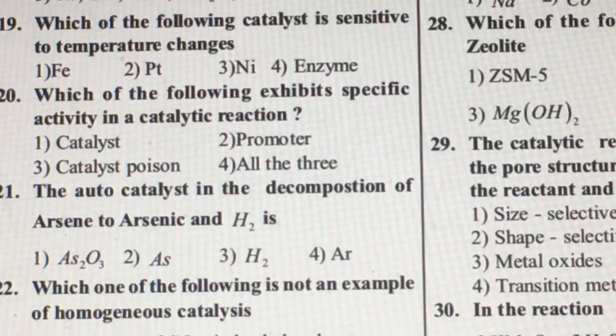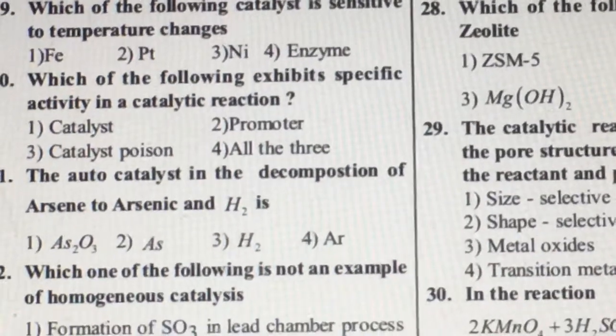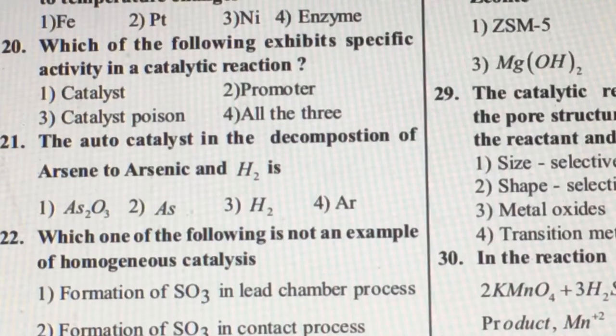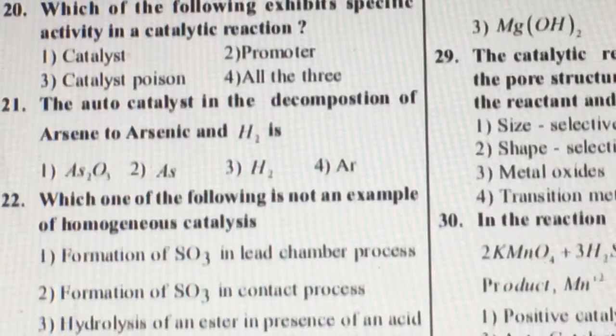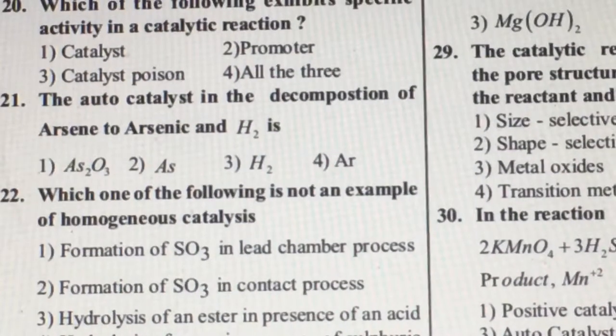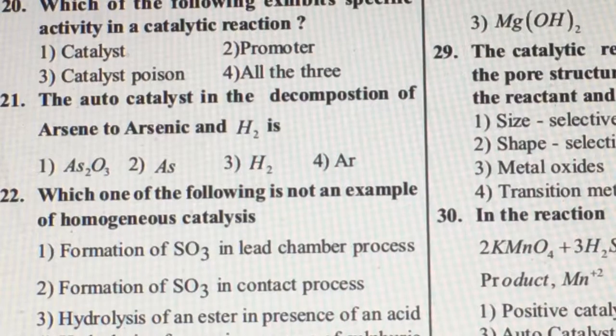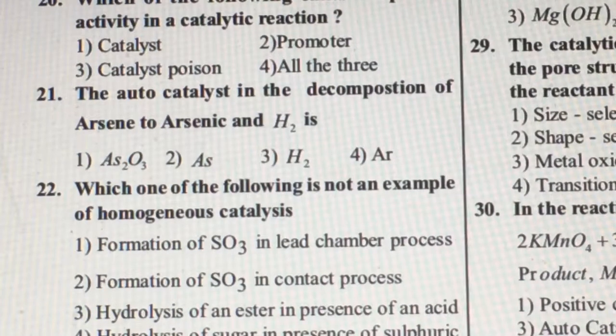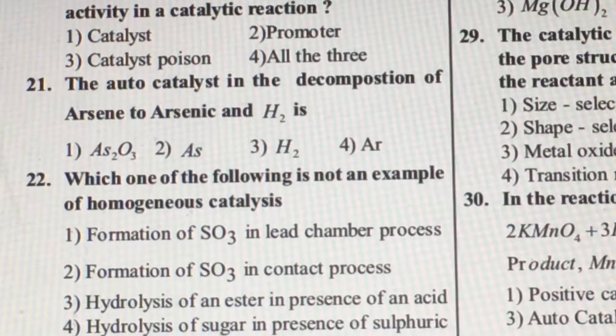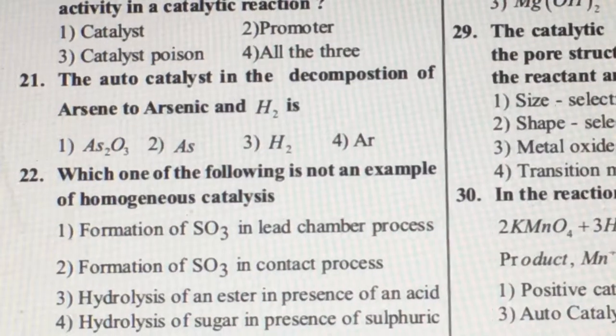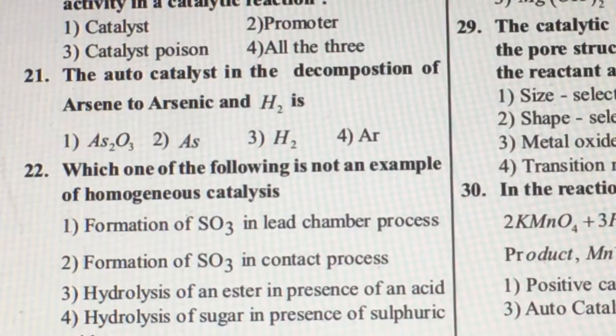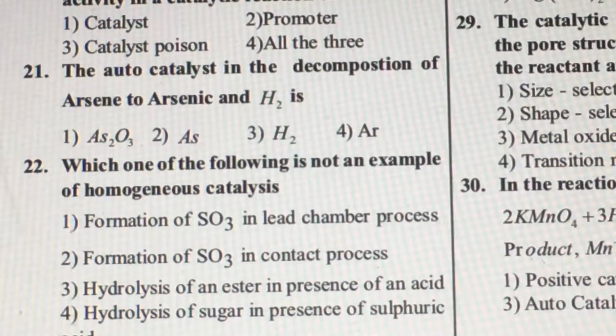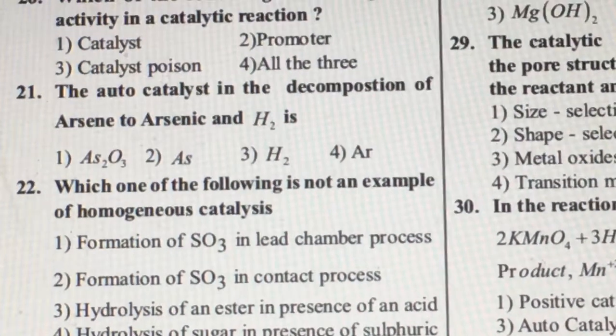Question number 20: which of the following exhibits specific activity in a catalytic reaction? All these fellows have specific reaction. Auto catalyst - sometimes one of the products itself can act as a catalyst and speed up the reaction. For example, when AsH3 is decomposing, the arsenic which is the product itself can act as a catalyst. If the product itself can act as a catalyst, it is called auto catalysis.